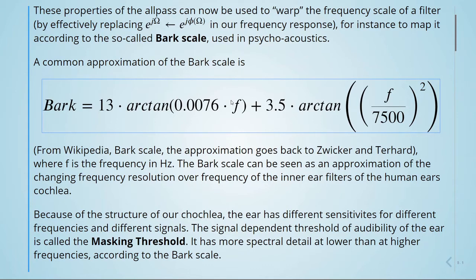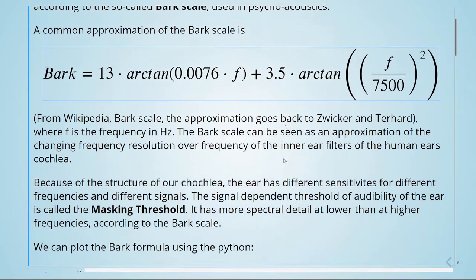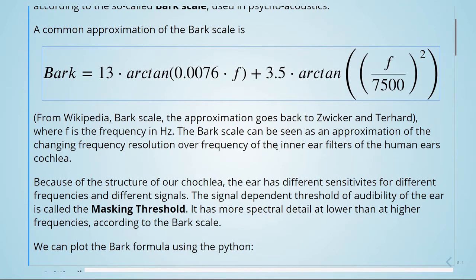The Bark scale can be seen as an approximation of the changing frequency resolution over frequency of the inner ear filters of the human ear's cochlea.